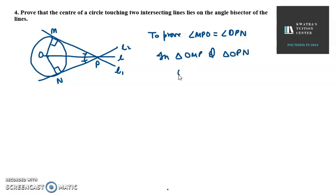यहाँ पर आपके radii हो गए, OM is equal to ON, radii of the circle. उसके बाद दूसरा क्या हो जाएगा, आपके दो angles OMP is equal to angle ONP, 90 degrees. Third क्या हो जाएगा, आपका common OP is equal to OP, common हो गया.